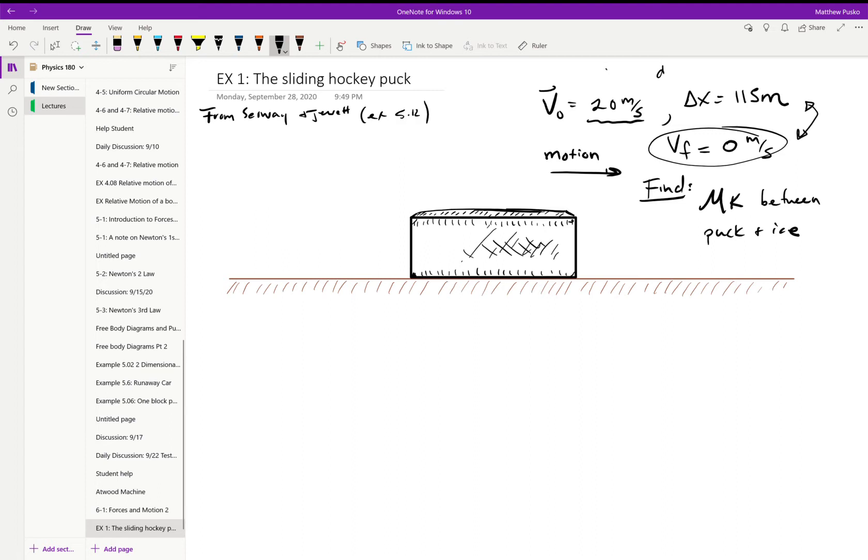We have, in other words, a displacement. We have a change in velocity, right? 20 to zero meters per second, and they want us to know what caused it. What's the frictional force?